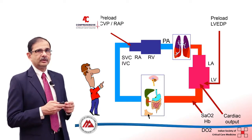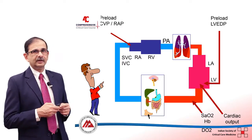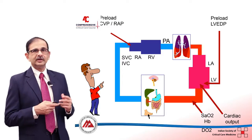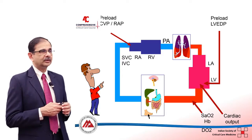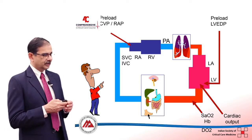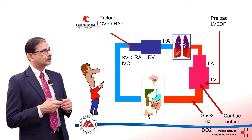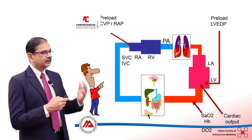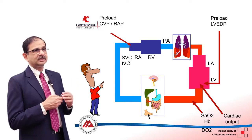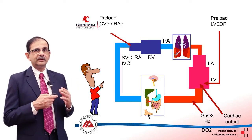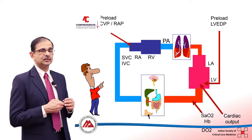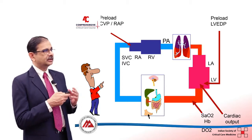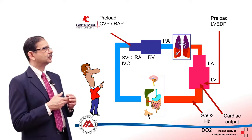The other important parameters are the hemoglobin level and the saturation of hemoglobin with oxygen. So cardiac output, hemoglobin, and oxygen saturation together determine the amount of oxygen that reaches the tissues every minute — which is the oxygen delivery, or DO2.